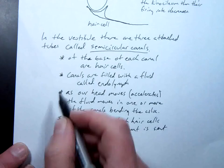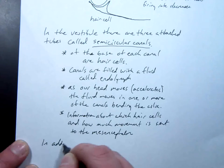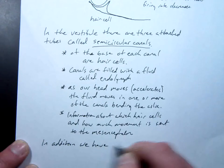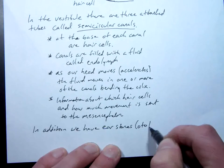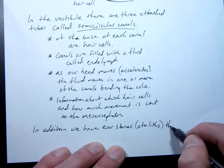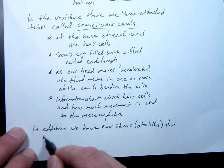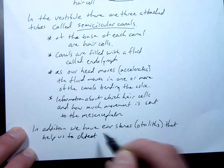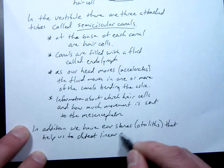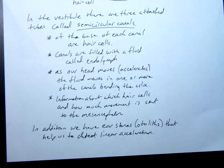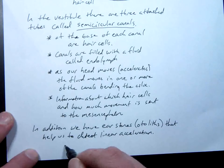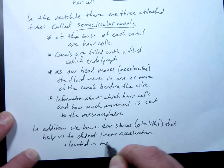This is not a bullet point. This is one last little thing. In addition, we have ear stones. Their actual name is otoliths, which means ear stones. That help us to detect linear acceleration. They're located in the maculae.